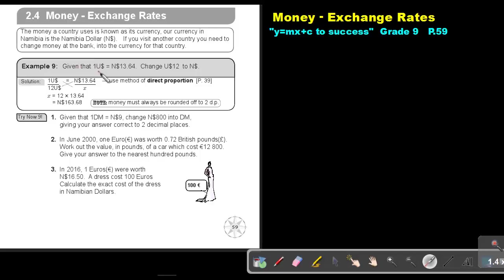Given that 1 US dollar equals 13.64 Namibian dollar, change 12 US dollar to Namibian dollar.